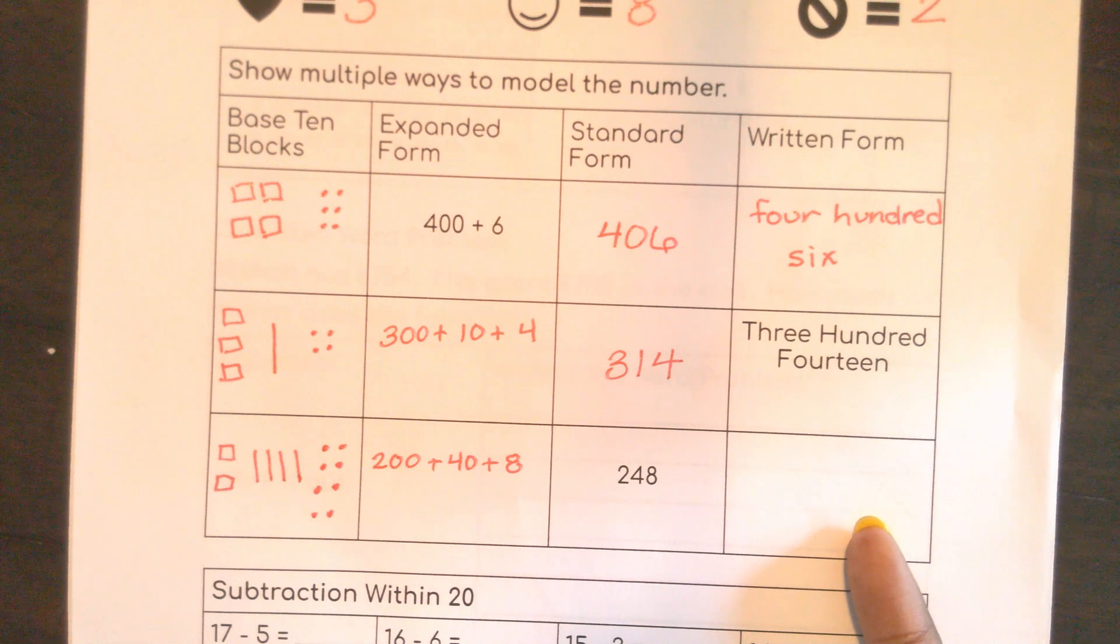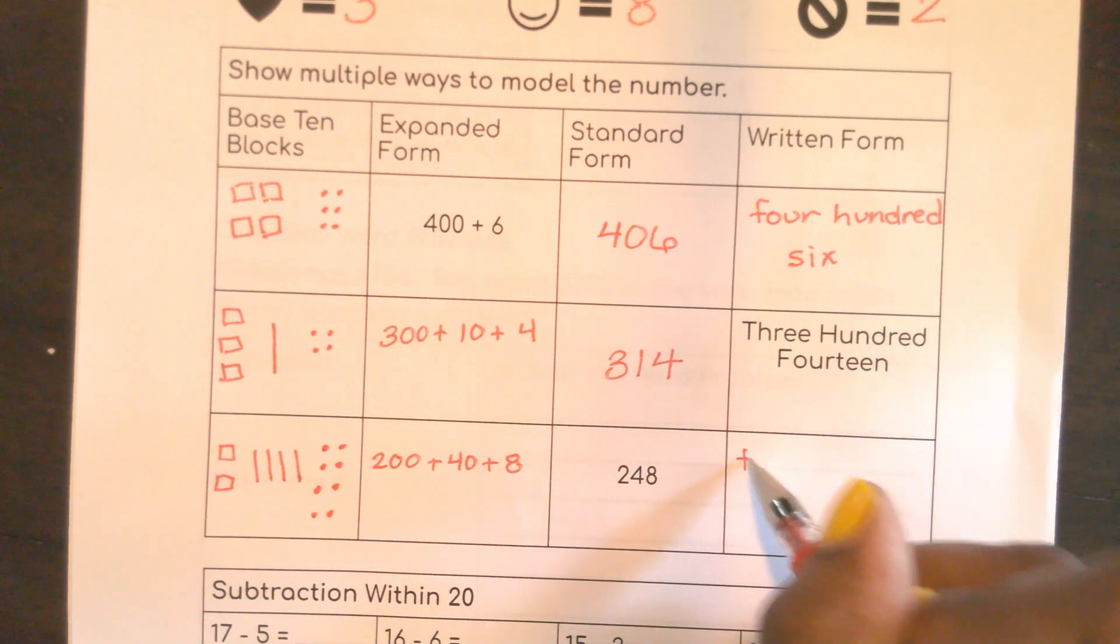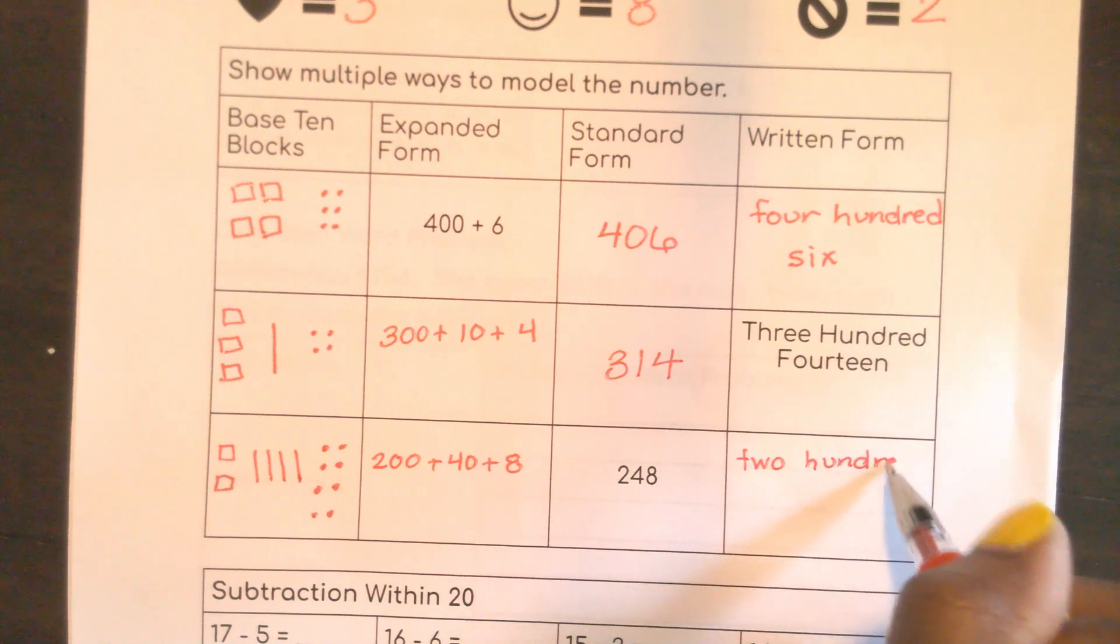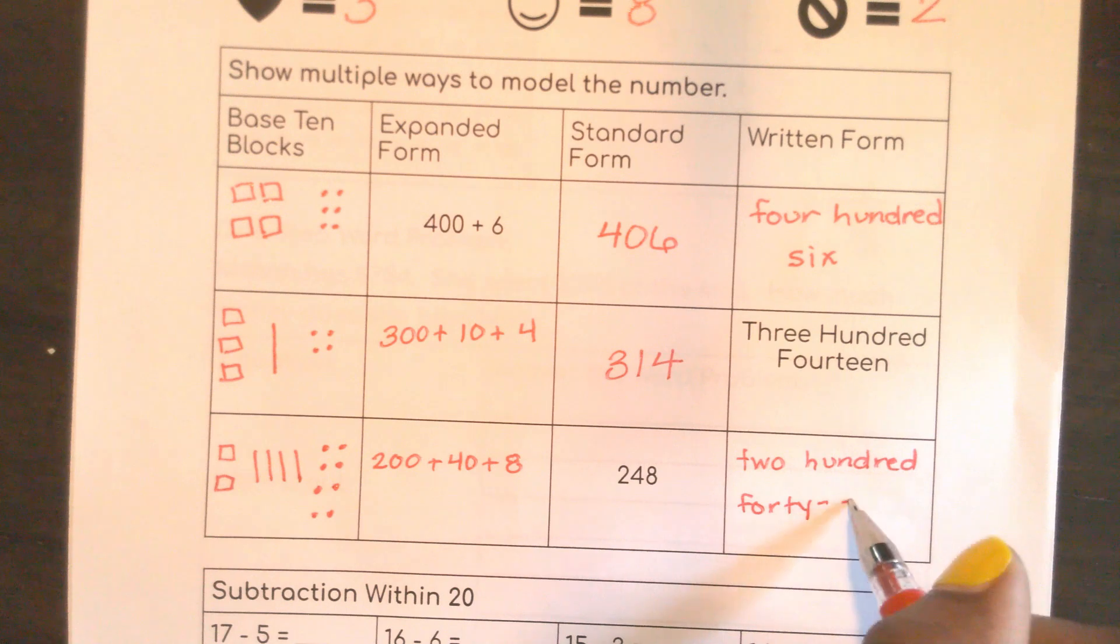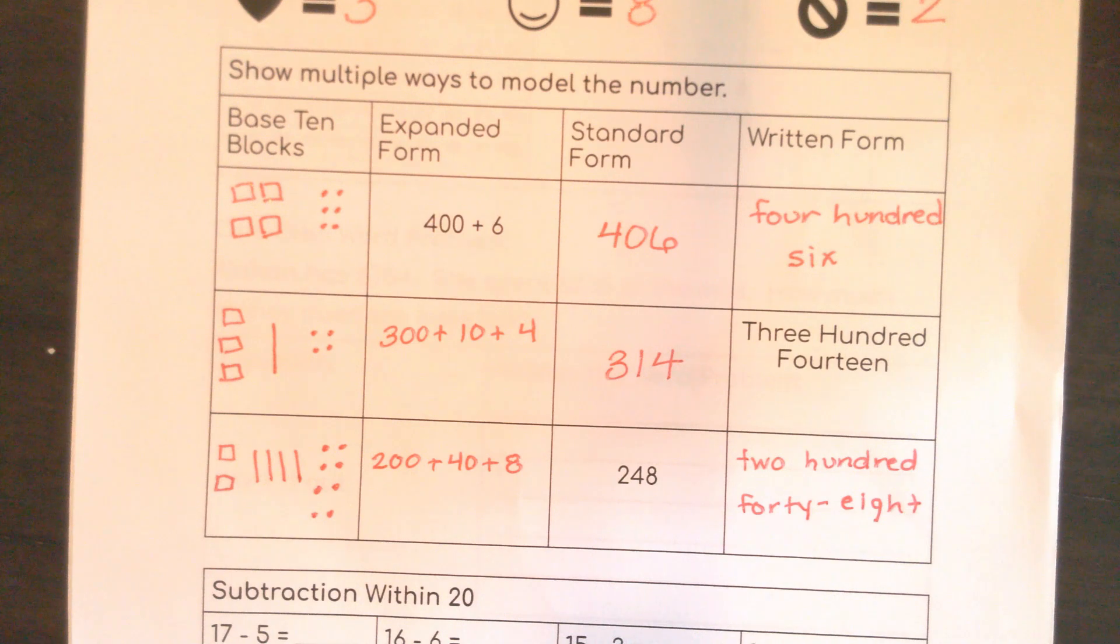And now, for the written form, name that number, 248: two hundred forty-eight. Perfect. This is great practice.